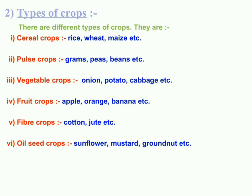Fruit crops include apple and banana. Fiber crops include cotton and jute. Oil seed crops include sunflower and mustard. There are predominantly three cropping seasons: Rabi, Zaid, and Kharif.